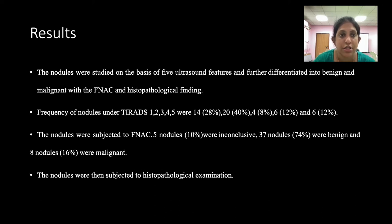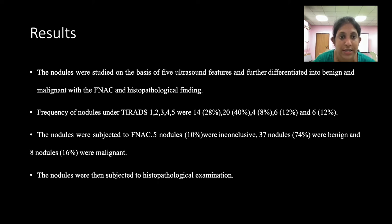Nodules were studied on the basis of five ultrasound characteristics and differentiated into benign and malignant using FNAC and histopathology. Frequency of nodules under TIRADS 1, 2, 3, 4, and 5 were 14, 20, 4, 6, and 6 respectively. The nodules were then subjected to FNAC. Five nodules (10%) were inconclusive on FNAC, 37 nodules were benign, and 8 nodules were malignant.